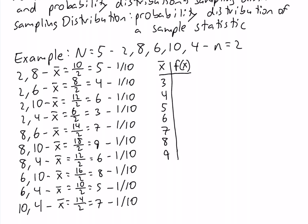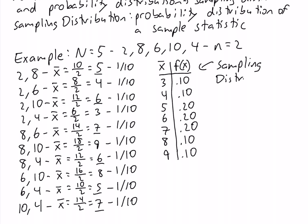The probability for each of these outcomes is not going to be the same, because some values of the sample mean occur more than once. Specifically, 5 occurs twice, 6 occurs twice, and 7 occurs twice; the rest of the values occur only once. So for values occurring once, the probability is 1 over 10, or 0.1, and for values occurring twice, the probability is 0.2. This is the probability distribution of the sample mean, which we refer to as the sampling distribution of the sample mean.